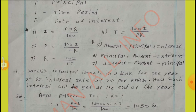T equal to 100 into I by PR. Another formula: Amount equal to Principal Value plus Interest. From this formula, we can write: Principal Value equal to Amount minus Interest, and Interest equal to Amount minus Principal Value.